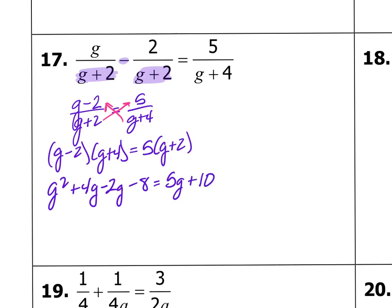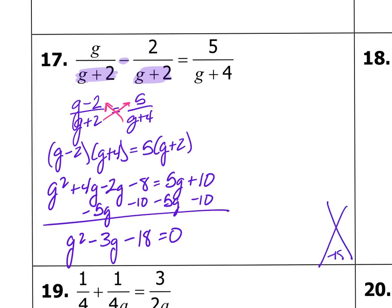Get everything on the same side of the equal sign. So I'm going to subtract 5g and subtract 10. That gives me g squared. Let's see. 4 minus 2 is 2, and 2 minus 5 is negative 3g, minus 18 equals 0. So now I'm going to factor. So give me two numbers that multiply to be negative 18 and add to be negative 3. I'm thinking that's 6 and 3, negative 6 and negative 3.